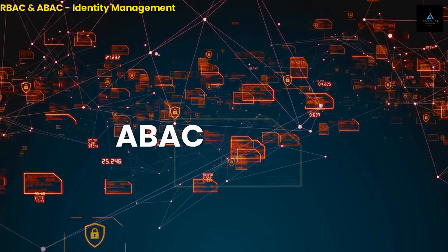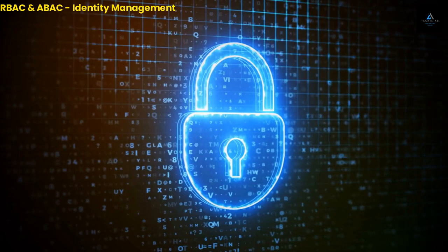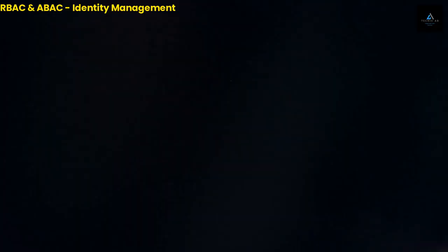ABAC is a more flexible method of access control that takes into account a wider range of factors when deciding whether to grant access to a resource. These factors can include things like a user's job title, department, location, or even the time of day.